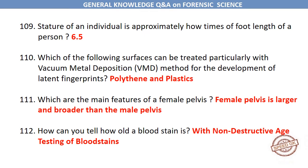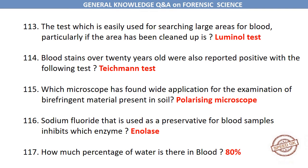Which surfaces can be treated with vacuum metal deposition (VMD) method for the development of latent fingerprints? Polythene and plastics. What are the main features of a female pelvis? The female pelvis is larger and broader than the male pelvis. How can you tell how old a blood stain is? With non-destructive age testing of blood stains. The test which is easily used for searching large areas for blood, particularly if the area has been cleaned up, is the Luminol test.